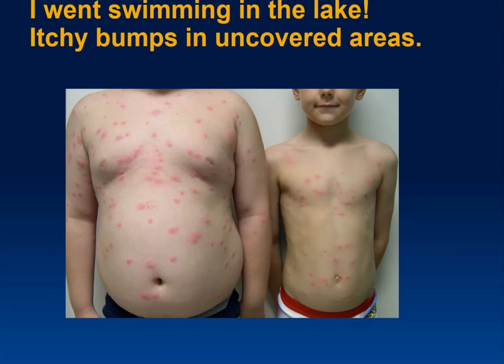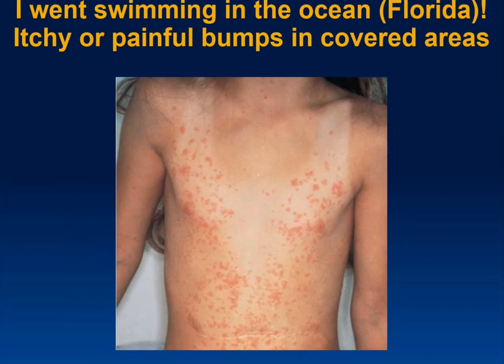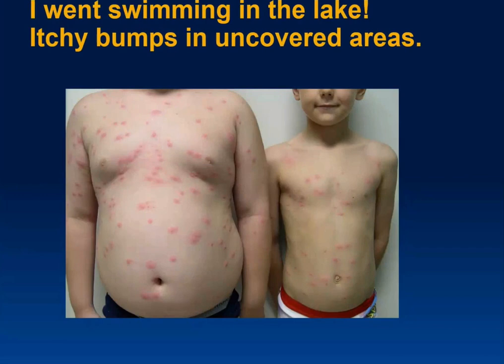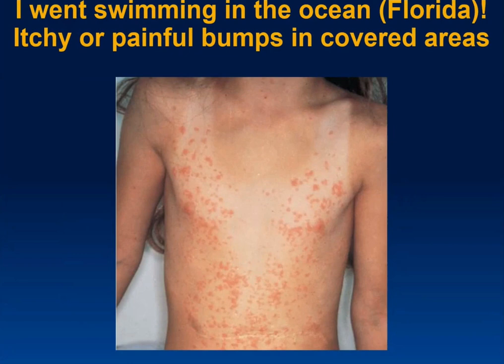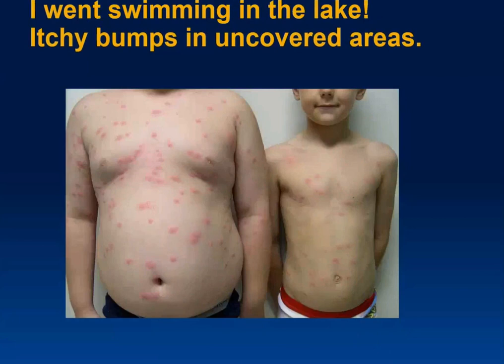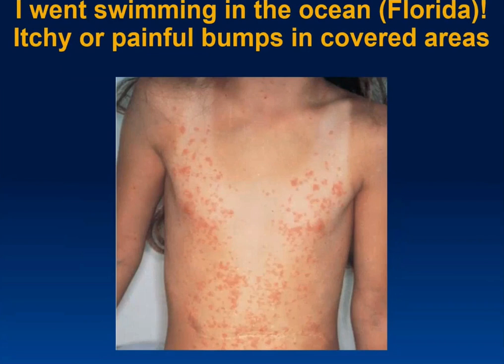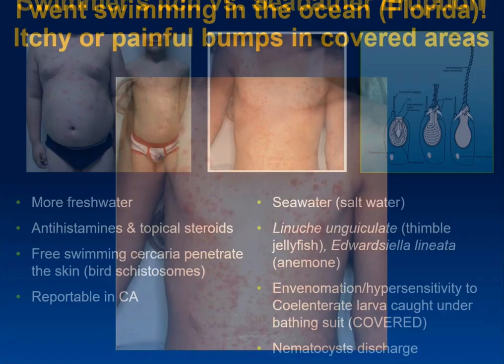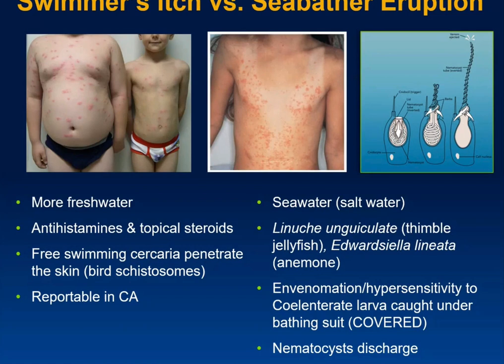Here are two youngsters who went swimming in a lake — they have itchy bumps in uncovered areas. Compare that to a young lady who swam in the ocean in Florida and has itchy or painful bumps in covered areas. Are these the same thing? They're actually different. The uncovered-area lesions are swimmer's itch, and the covered-area lesions are sea bather's eruption.